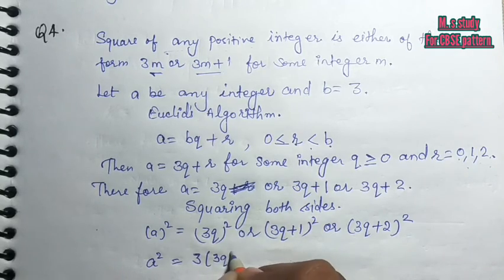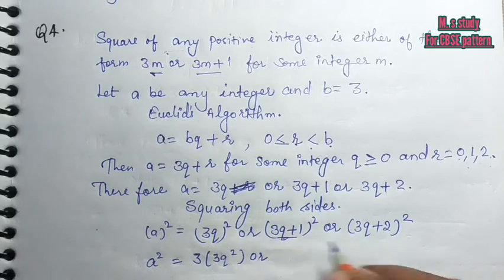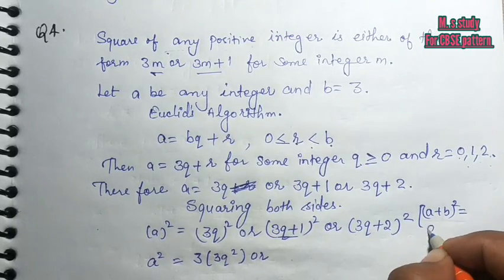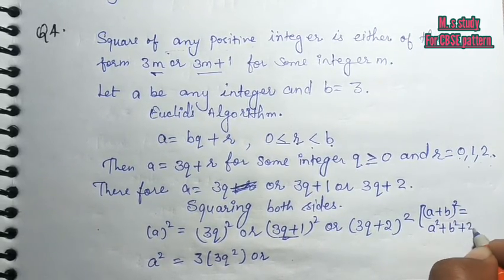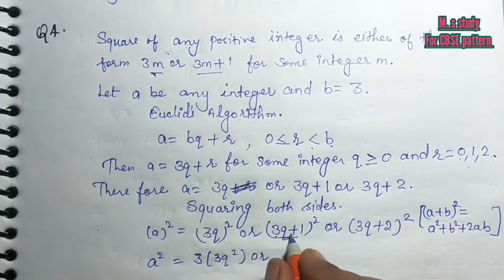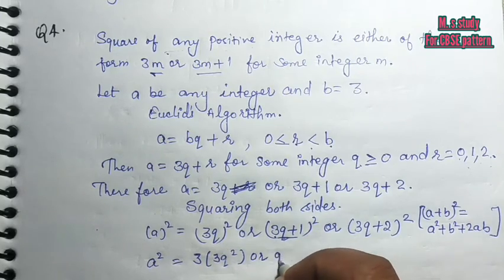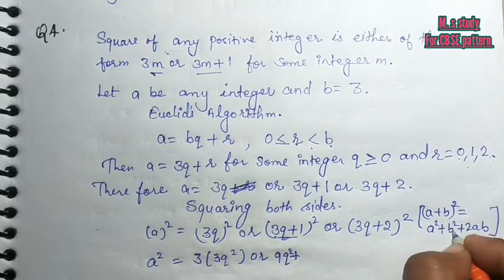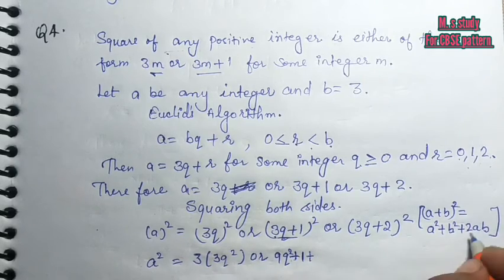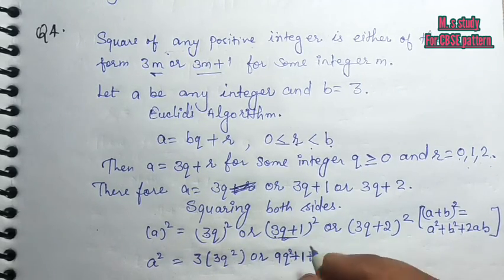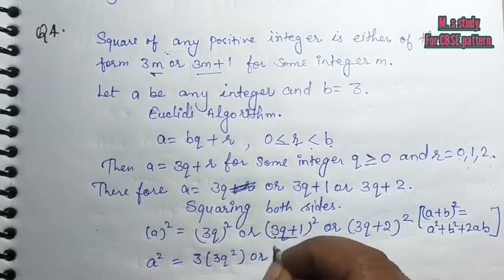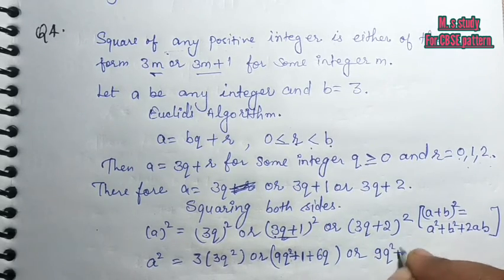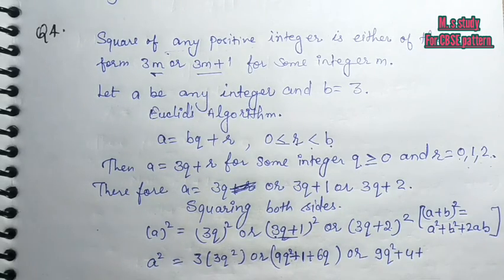When we solve this, we will use the formula a plus b squared equals a² plus b² plus 2ab. So according to this, this is 9q² plus 2ab. If we use a² plus 2ab, it means 2 times 3 equals 6q. When we use this, this is 9q² plus 4 plus 6q.